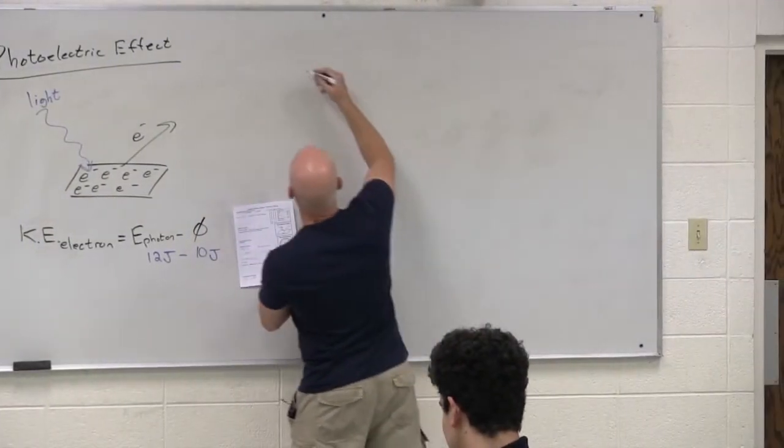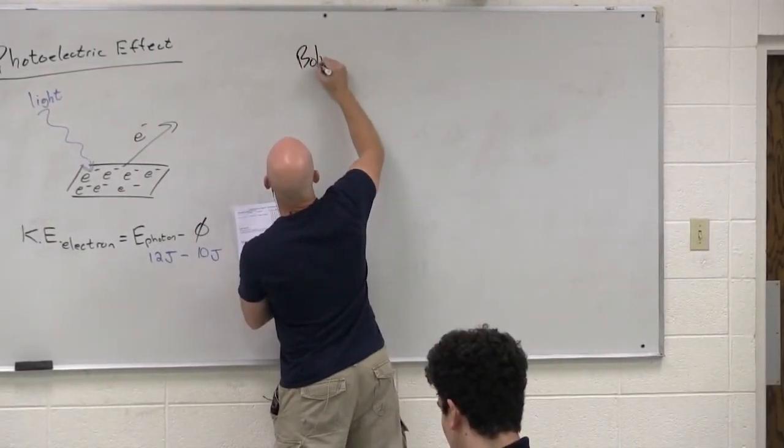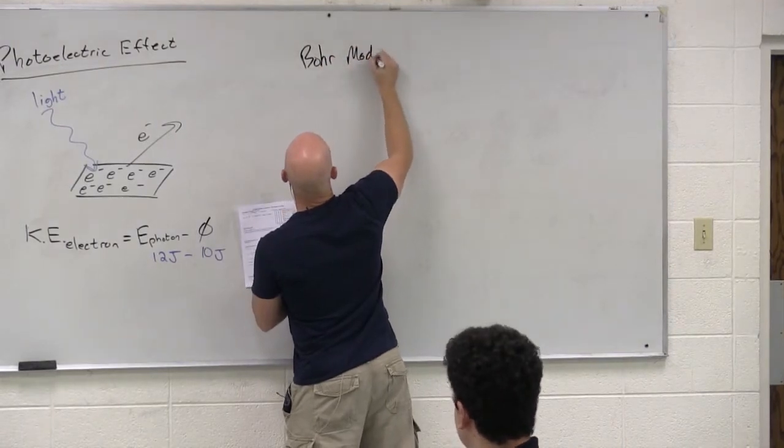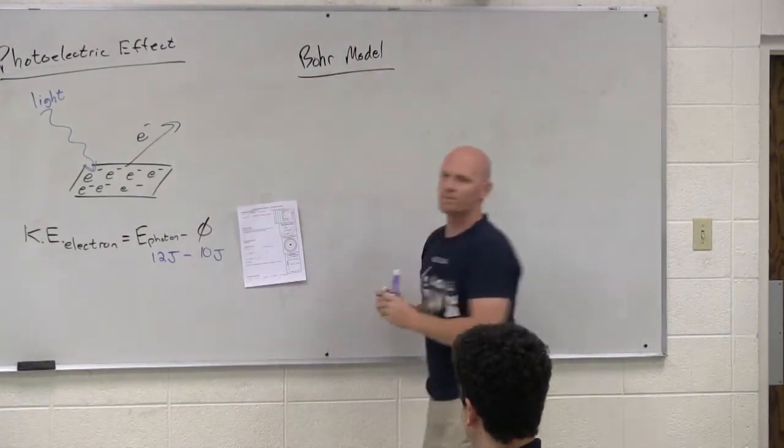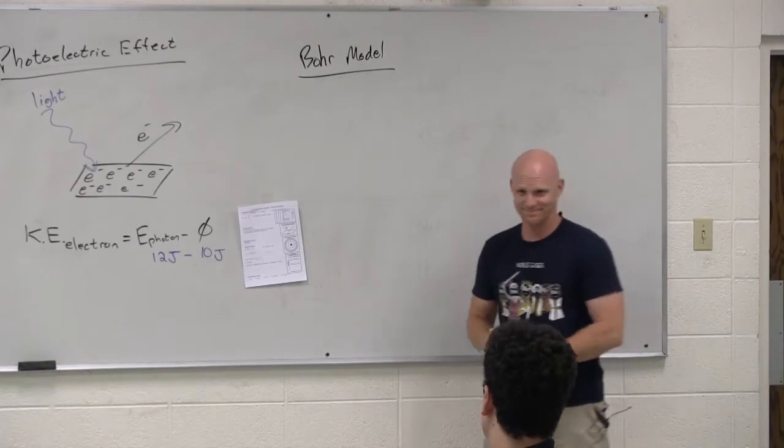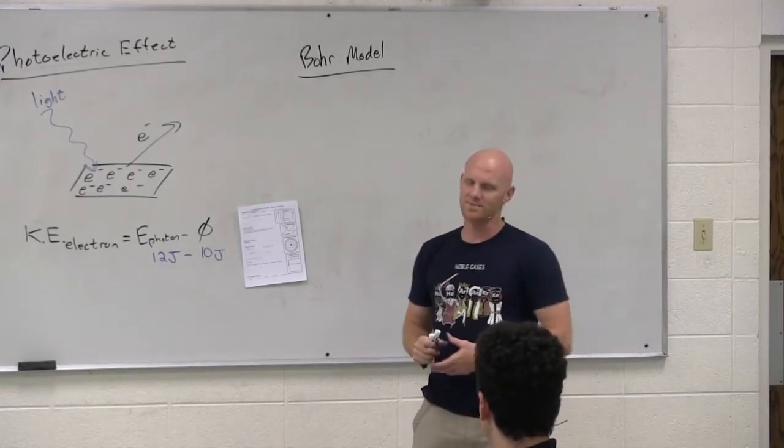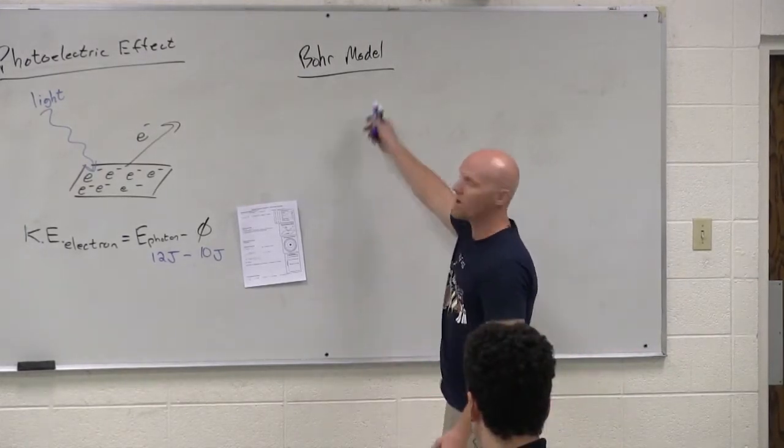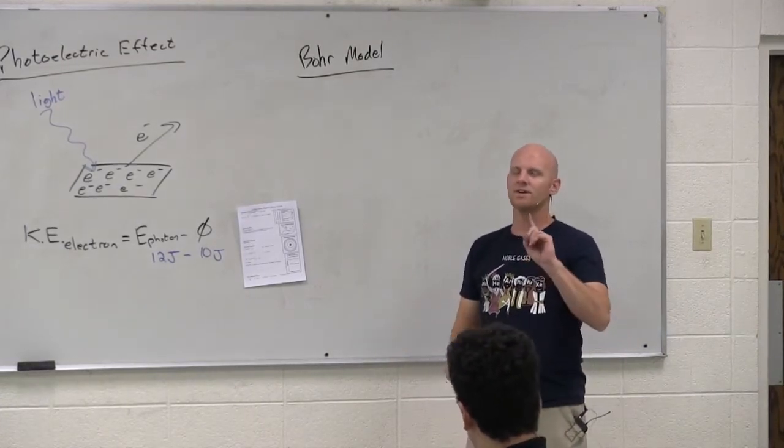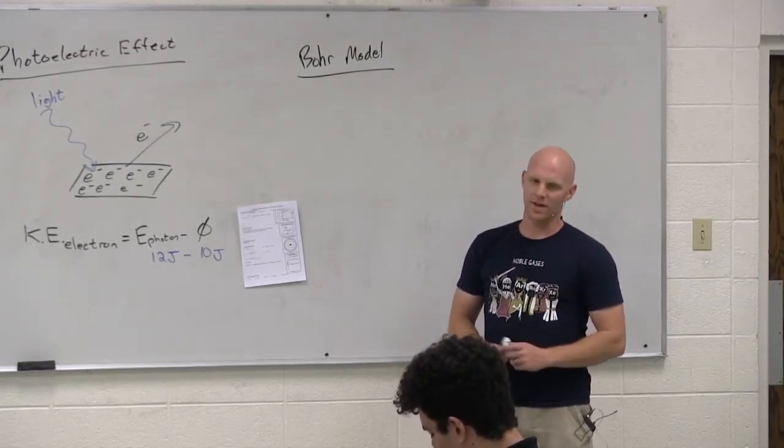Let's talk about the Bohr model of the atom. So what is the accepted model of the atom? It is not the Bohr model of the atom. There's a quantized model of the atom, but Bohr was wrong. He was totally wrong about his model. But he got one thing right, and that is he said it was quantized. So we give him a lot of credit.